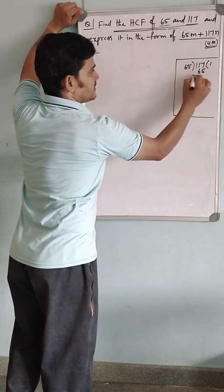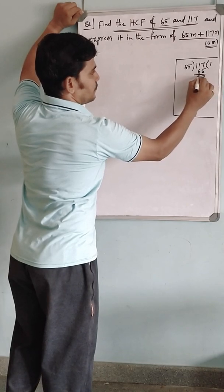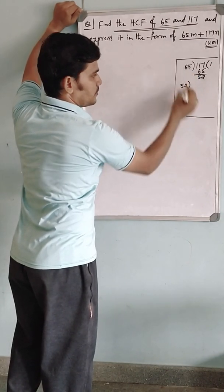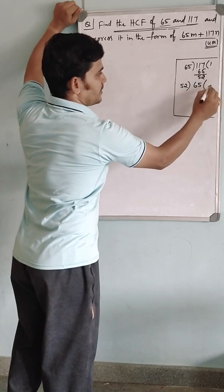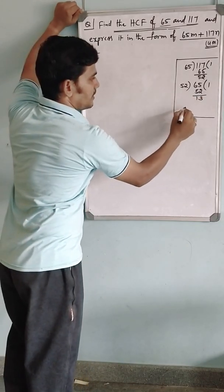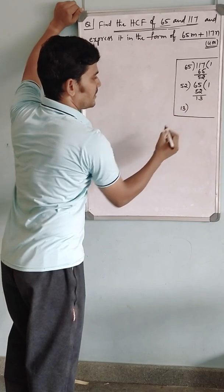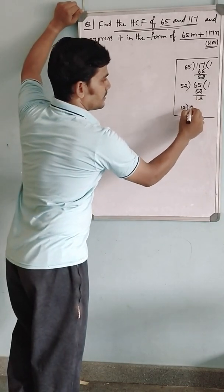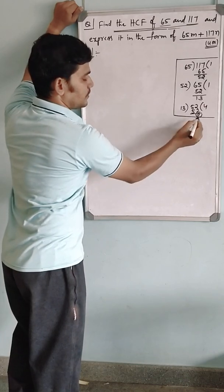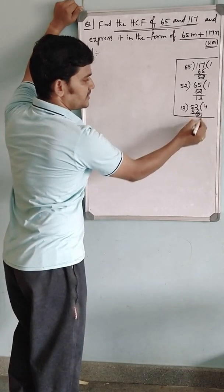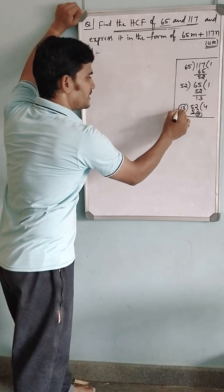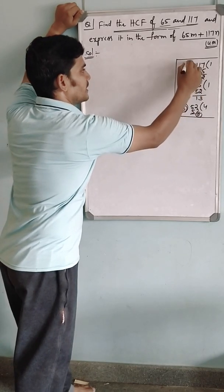65 goes one time into 117; 65, the remainder is 52. Since the remainder is not zero, 52 is taken as the new divisor. 65 divided by 52 gives remainder 13, which is again not zero, so we proceed. 52 divided by 13 gives remainder 0. Since the remainder is zero, we stop. The divisor at this step is 13, so 13 is the HCF of the given two numbers.